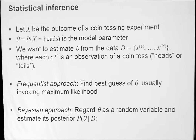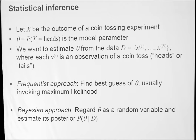One approach is the frequentist approach, and the other is the Bayesian approach. I'm going to focus here on the frequentist approach, since we will move to the Bayesian stuff later on. The frequentist approach is to find the best guess of theta from the data, usually invoking maximum likelihood. The Bayesian approach would be to regard theta itself as a random variable with its own distribution, and to find the posterior of that distribution — the probability of theta given the data D.